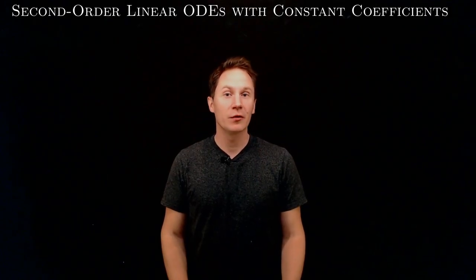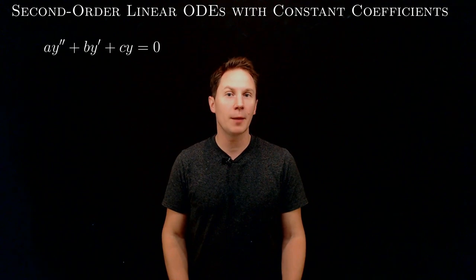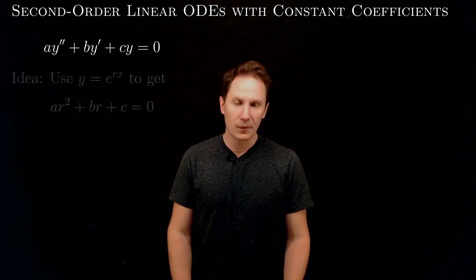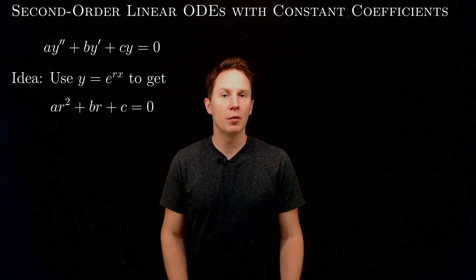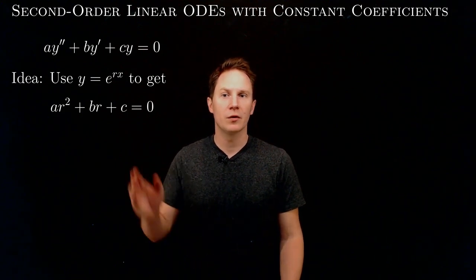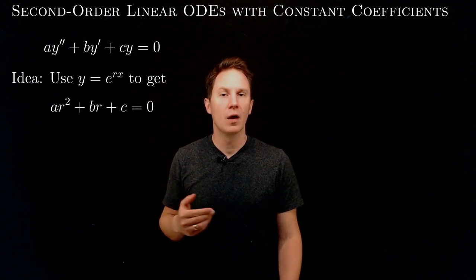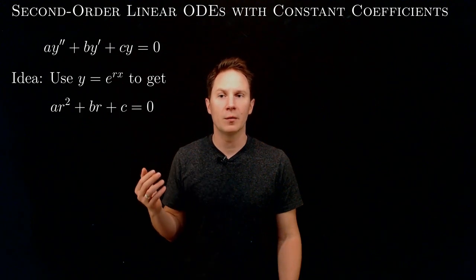Second-order linear ODEs with constant coefficients have the form a times y double prime plus b times y prime plus c times y equals zero, where a, b, and c are constants and y is the unknown function of x. We can solve all of these equations using a simple ansatz for the solution in the form of an exponential e to the rx, where the coefficient r in the exponent is unknown and is to be determined.